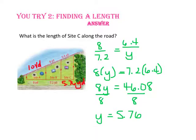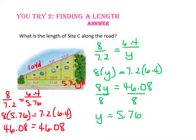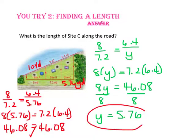Since the length of site C along the river is the shortest, it makes sense that the length of site C along the road is also the shortest. Let's check our answer by substituting 5.76 back into our original proportion. Since 46.08 equals 46.08, we know we are correct.